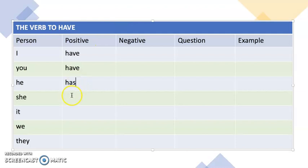We have, they have. So we can see here that I, you, we, and they are the same: have, have, and have. And he, she, and it are has.